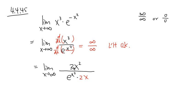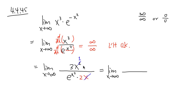Simplify as much as possible. I see that x can be cancelled out — cross out one of the x's, so x squared becomes x to the first power. This gives the limit when x approaches infinity of 3x over 2e to the x squared.